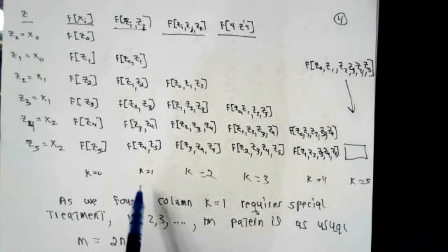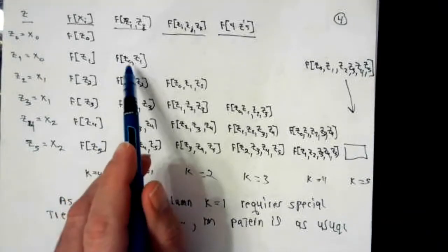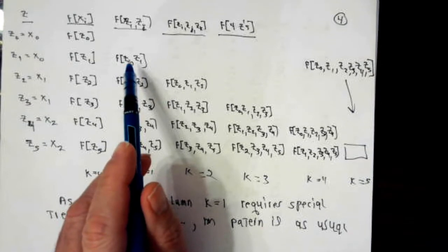Except column number k equal 1 requires special treatment. We figured out in this column k equal 1, in those circumstances in which you would get division by 0, you must replace the divided difference with a derivative value. That's going to happen at the first row entry in column k equal 1, and then i equal 3, and then i equal 5. So this number is a derivative value.